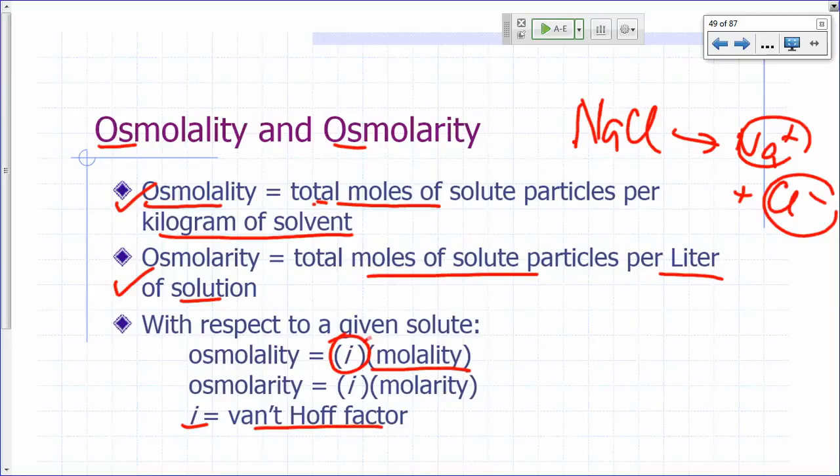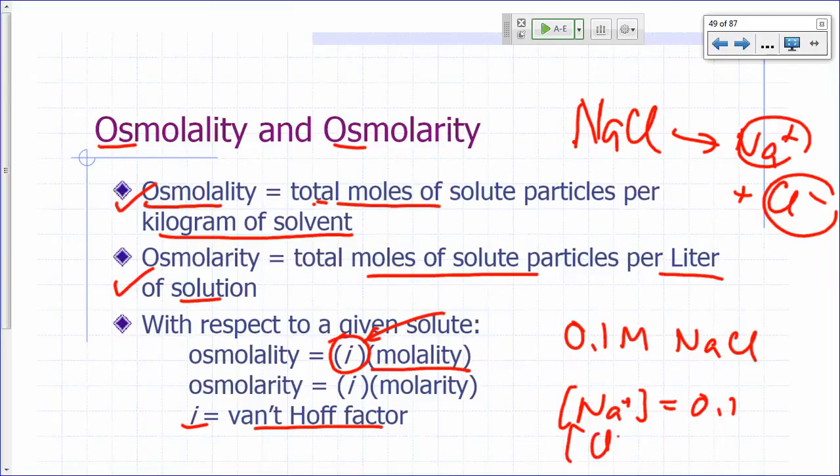So for example, in dilute solutions of sodium chloride, if I have a 0.1 molar sodium chloride, what would be the concentration of sodium? 0.1. What would be the concentration of chlorine? 0.1. So what's the total concentration of particles? 0.2. So what would be I for sodium chloride? What would I multiply 0.1 by in order to get 0.2? So the Van't Hoff factor essentially gives you an indication of the extent to which your solute ionizes in water.